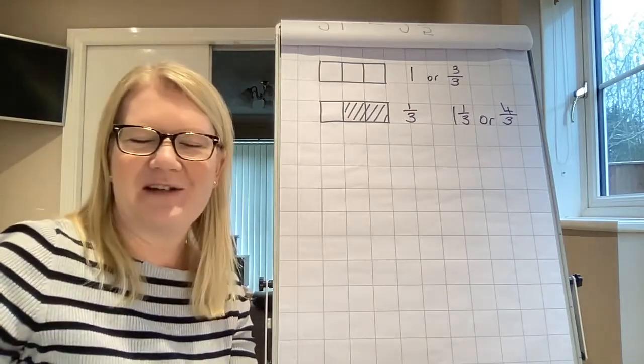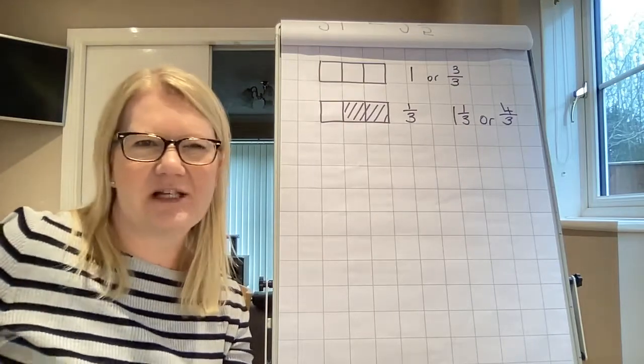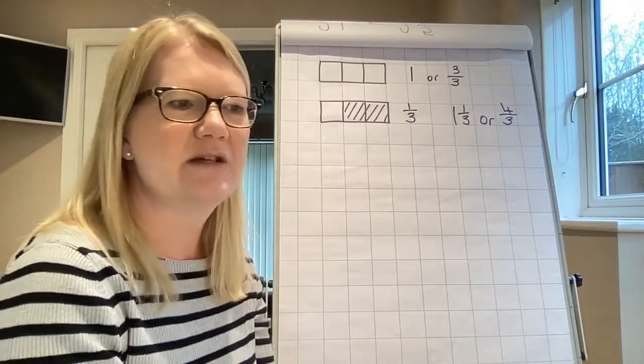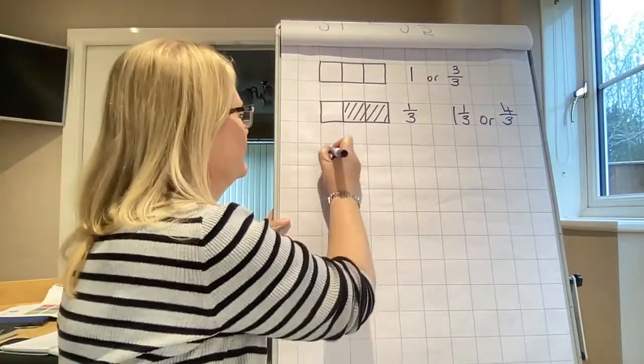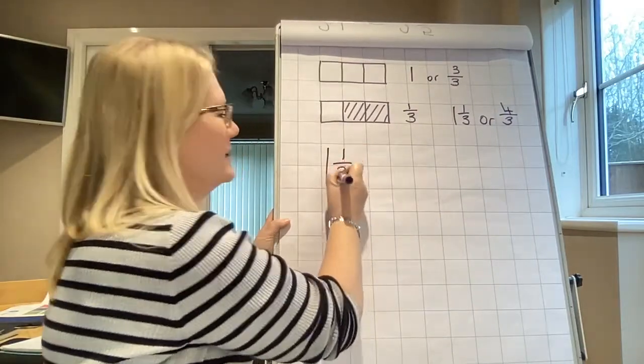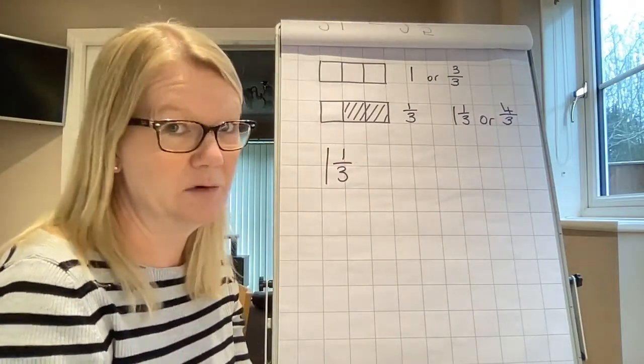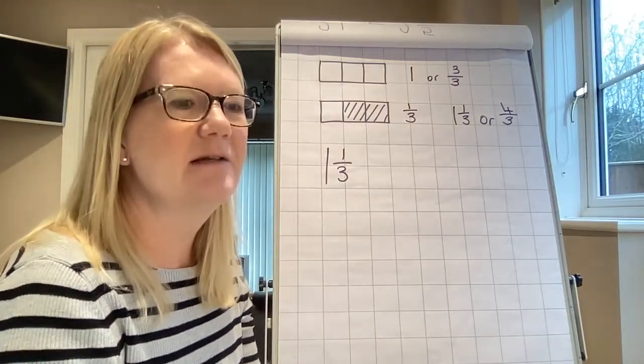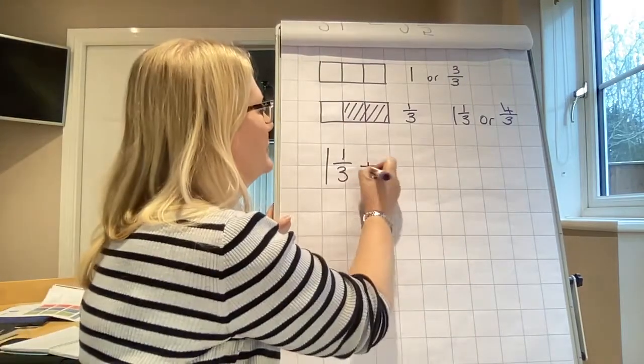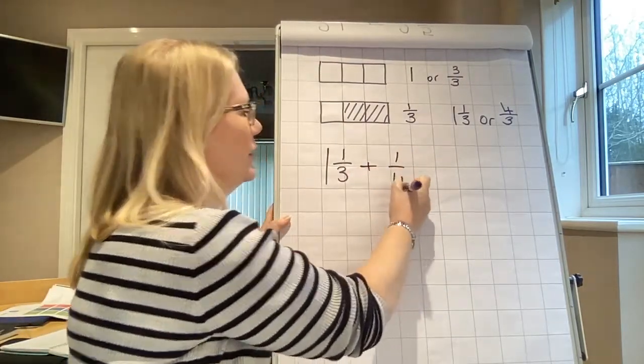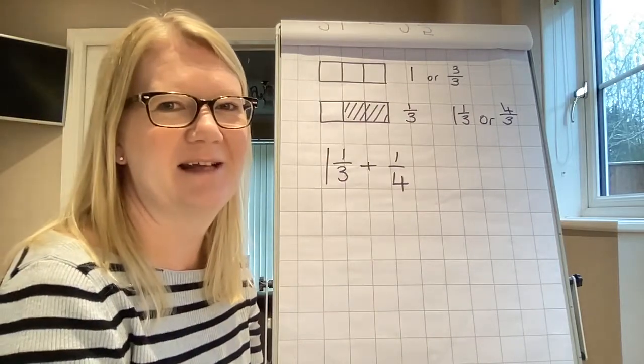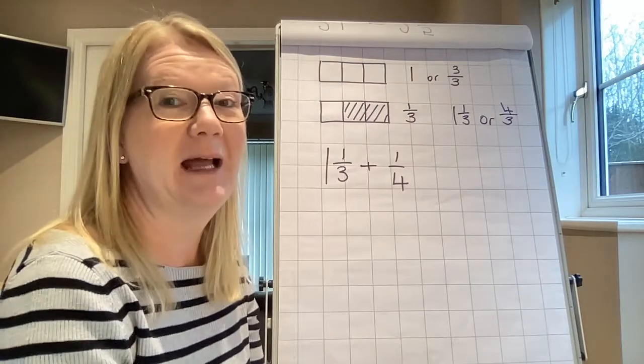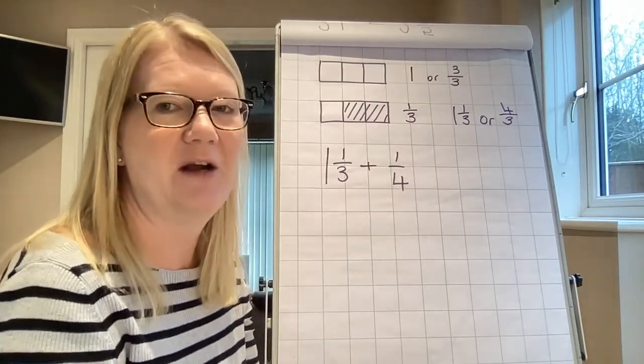So my first example, I'm going to stick with pizzas. No, I'm going to go with boxes of chocolates. Right, I have got one and a third boxes of chocolates left from Christmas. I haven't, that's a lie, I've eaten them all. But we're going to say I've got one and a third boxes of chocolates left. But Steve, he's a little bit greedier than me and he's only got a quarter of a box of chocolates left. That's probably more true. So how much chocolate do we have between us? And I want the answer as a mixed number.